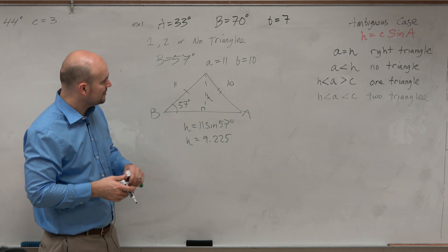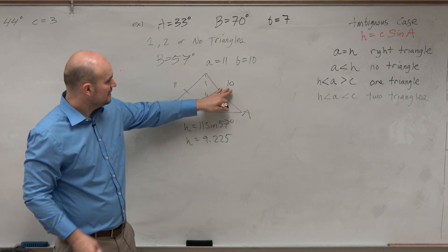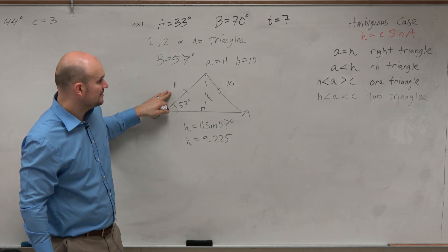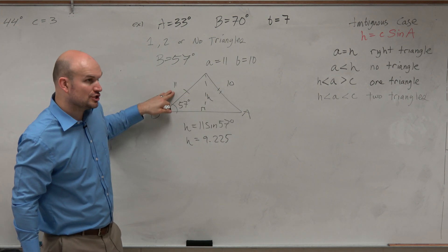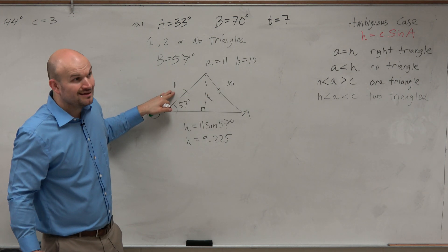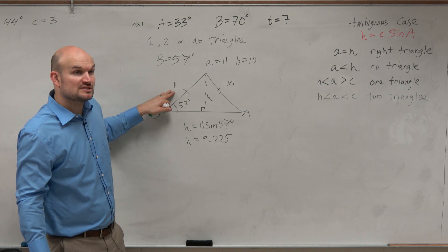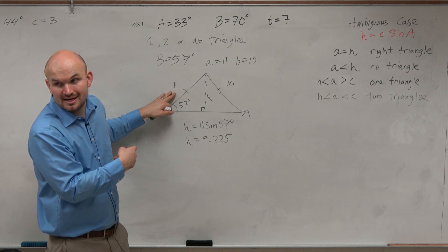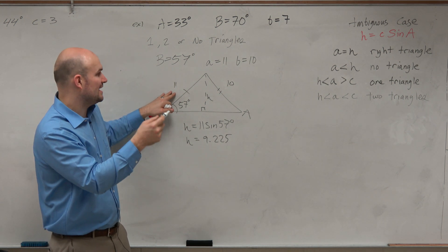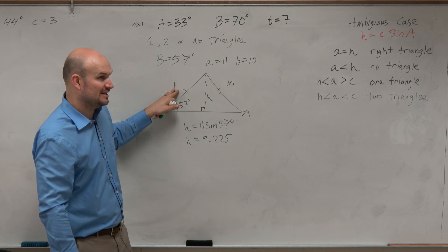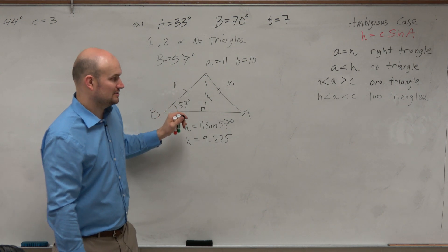Now the next one, before you start texting on your phone, is let's compare this with the other side. Is 10 larger or smaller than 11? Smaller. Smaller. So therefore, if it was larger, which was the example we just did, one triangle exists. So now that it's smaller than this one, that means two triangles exist.